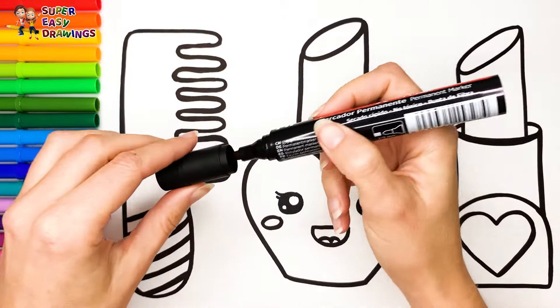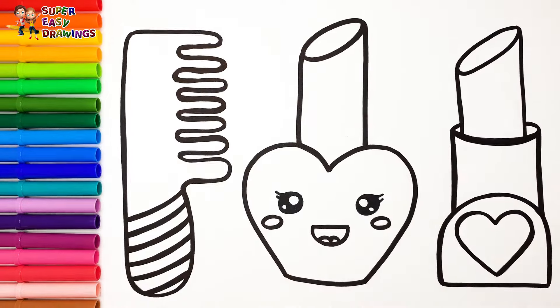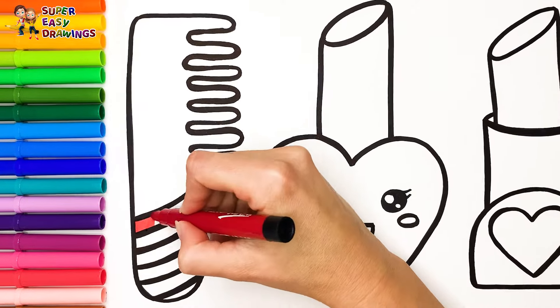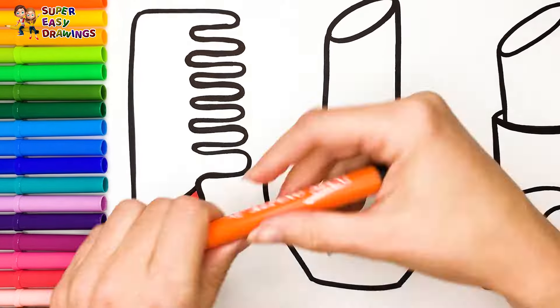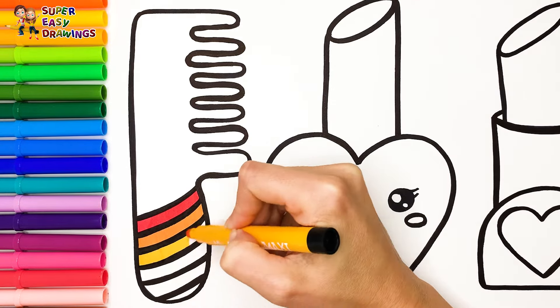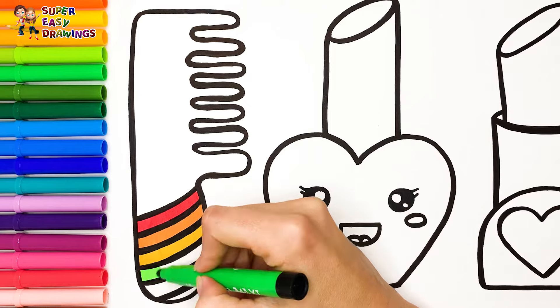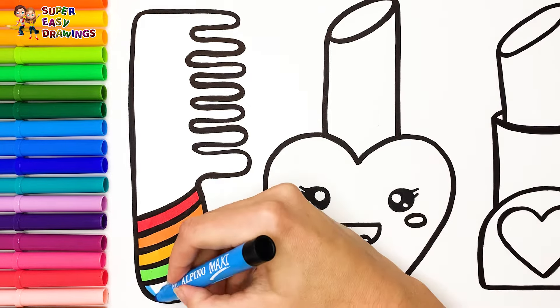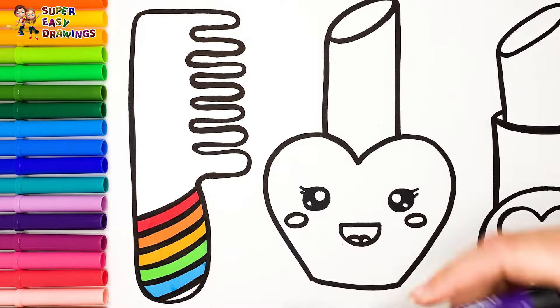Let's start coloring. When coloring the brush, I'm going to use the colors of the rainbow here: red, orange, yellow, green, blue, and purple.